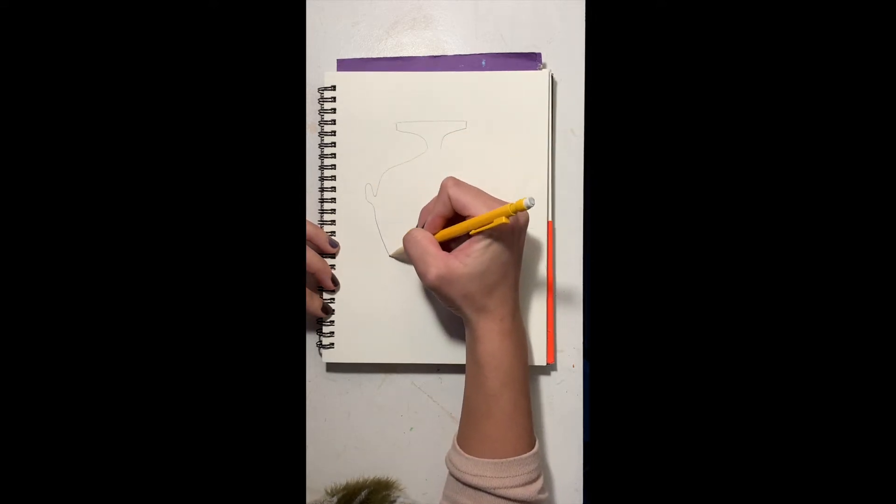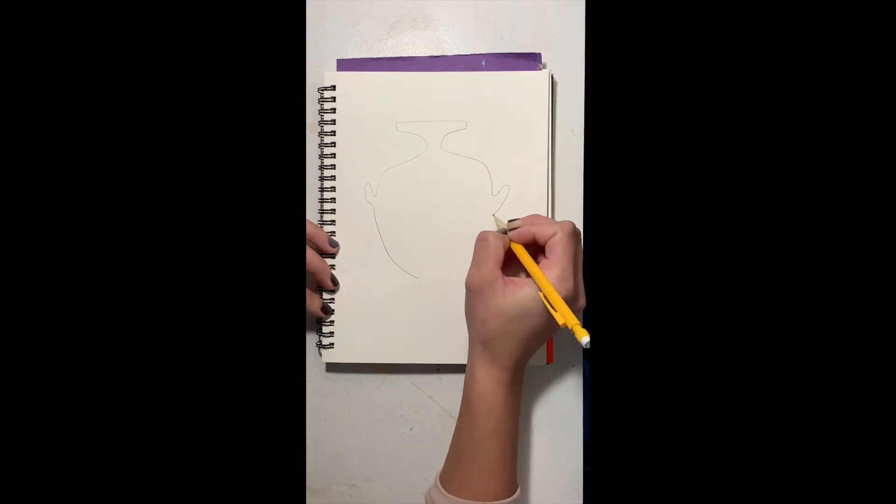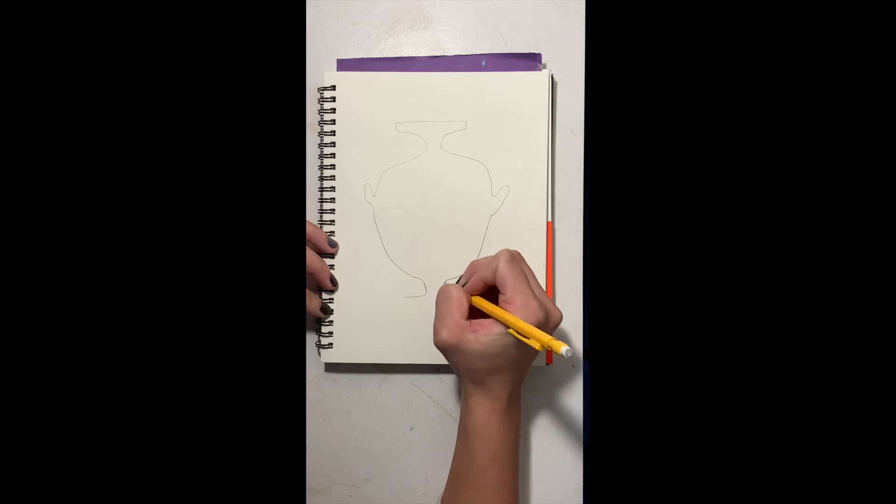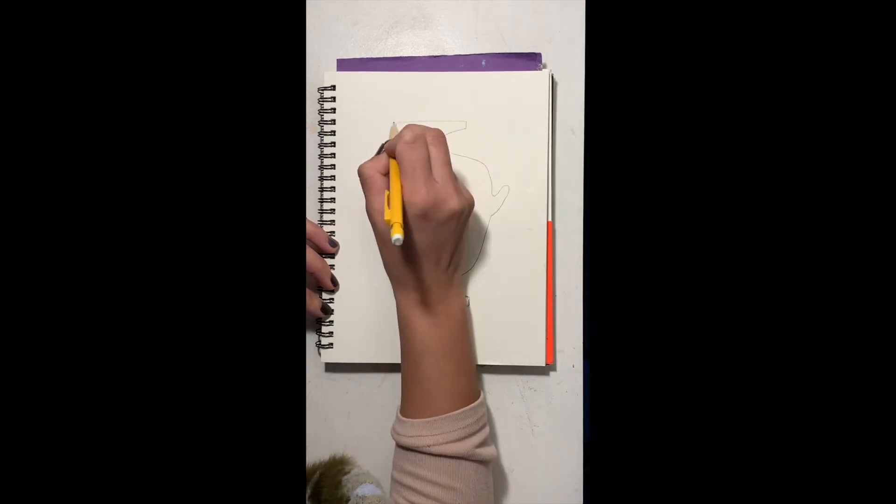So I'm just drawing the top and then this is called the shoulder of the pot and I'm drawing those little handles all the way down to the foot or the base and then I'll go over that again so everyone can see.